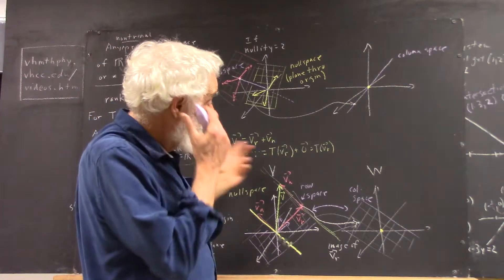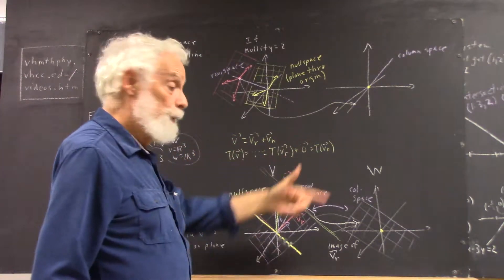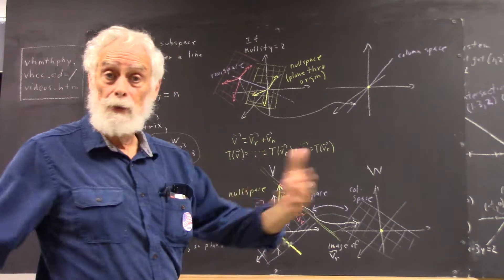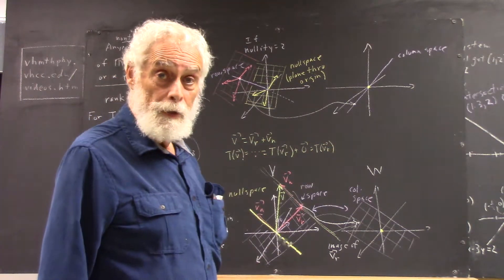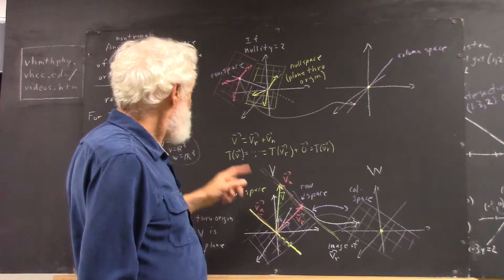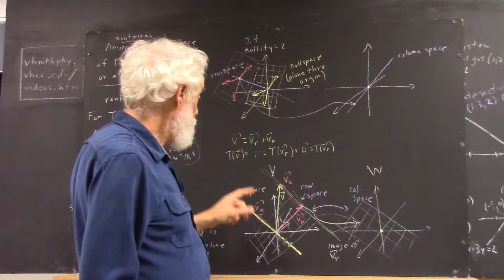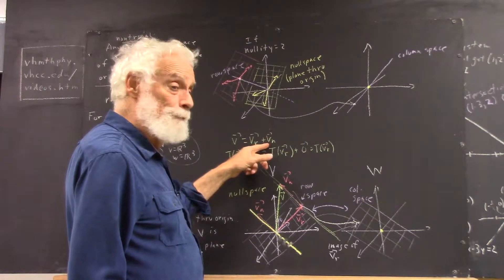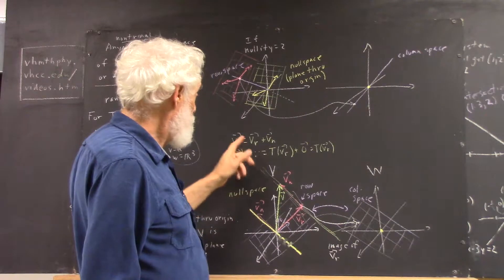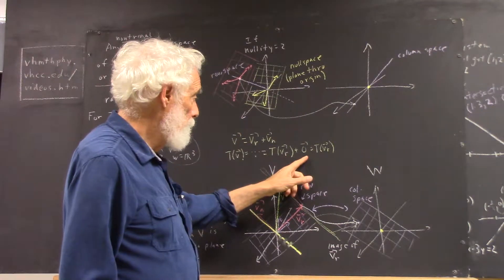so T of V, the equation you get and the series of equalities you get is exactly the same as it was when we did it in R2. Because we're only relying on the linearity of T, we get Tvr plus Tvn. And then, Vn is in the null space, so Tvn is the zero vector, and we're just left with Tvr plus a zero vector, which is Tvr.